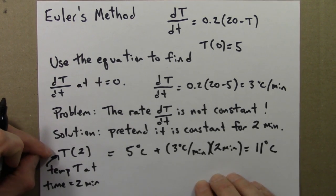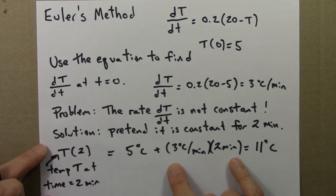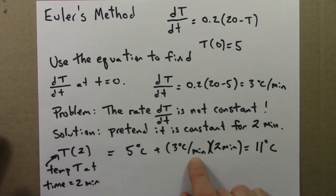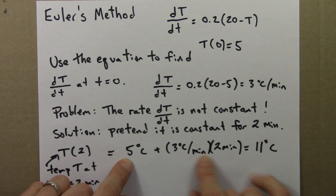I want to know T of 2, the temperature T at time 2 minutes, 2 minutes after this object is placed in the room. So how much does it warm up in those 2 minutes? Well, it's warming up at 3 degrees per minute, and we pretend that that's constant. It's not really, but we'll just ignore the problem and pretend. 3 degrees per minute for 2 minutes. That's a total increase of 6 minutes. I take those 6 minutes, add them to 5. I get 11.